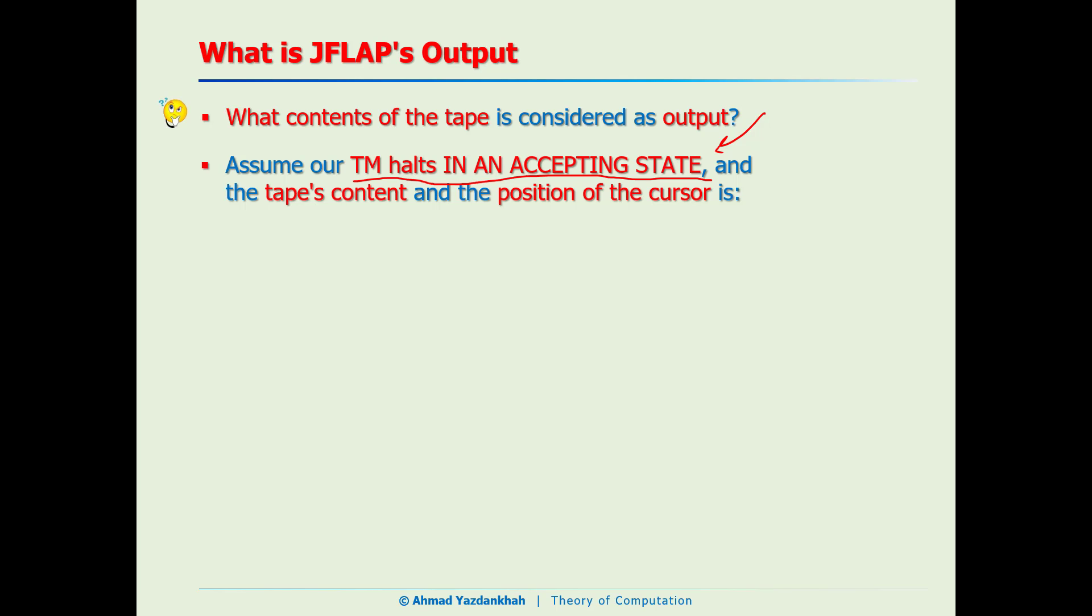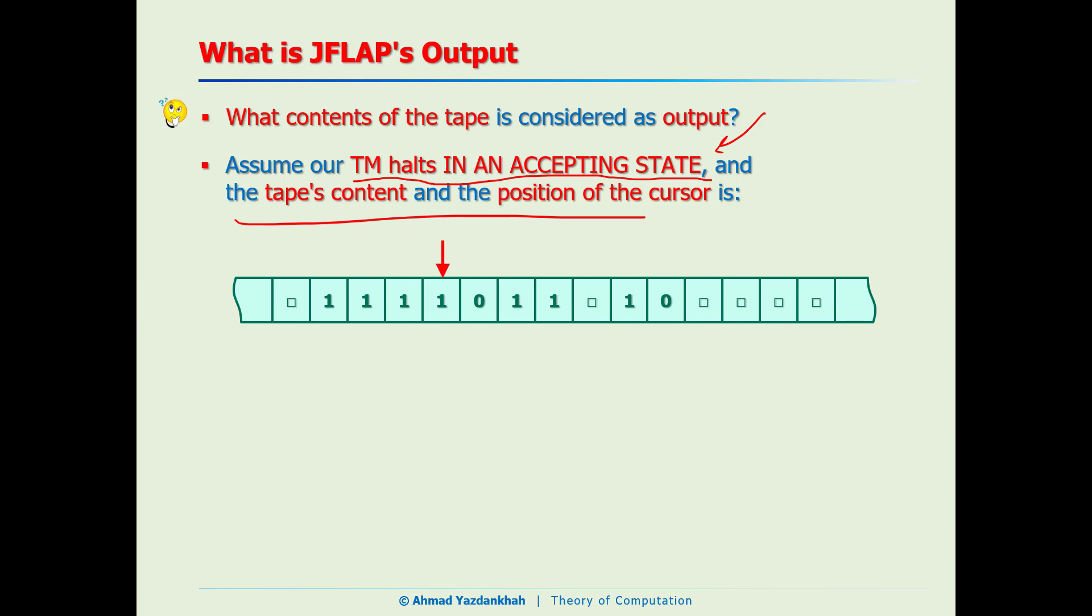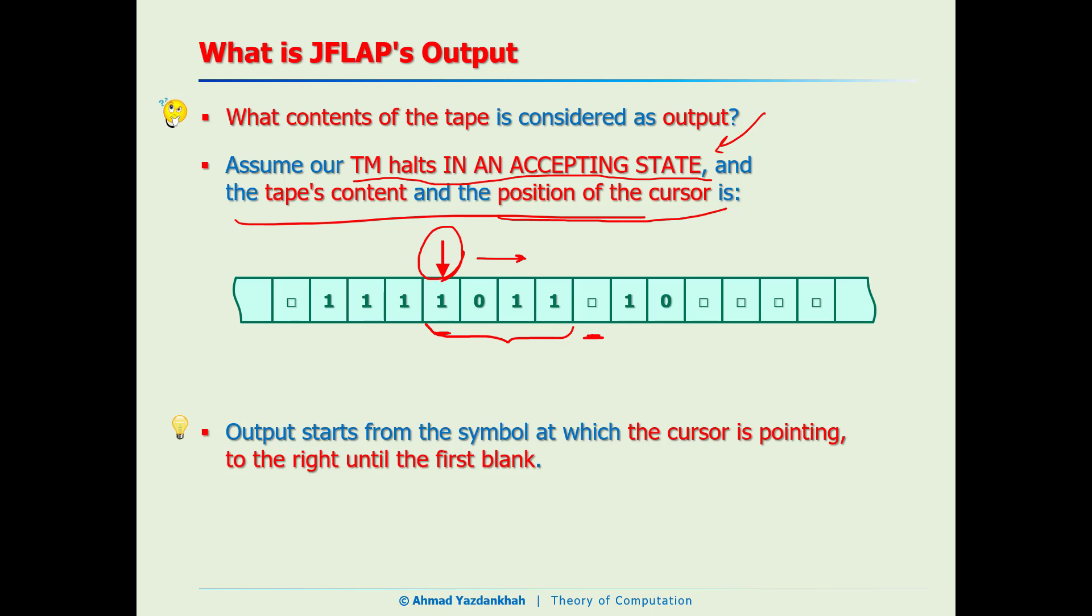Let's assume that Turing machine halts in an accepting state. I am emphasizing on this one because if the Turing machine does not halt in an accepting state it does not show you the output. So the Turing machine halts in an accepting state and the tape contents looks like this, and also the position of the cursor. Then we define the output from where the cursor is pointing, from here to the right until the first blank. So the output of the Turing machine will be defined like this. For this particular example the output will be 1011. One more time: from where the cursor is pointing to the right until the first blank.